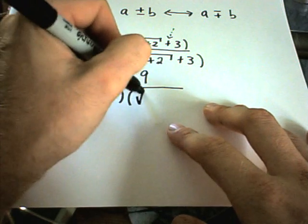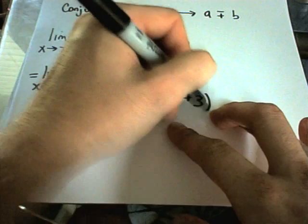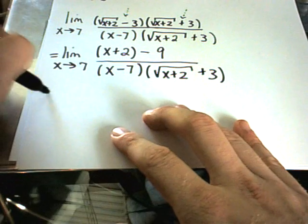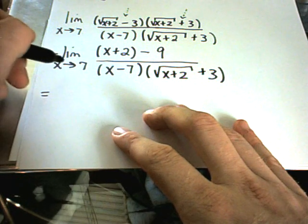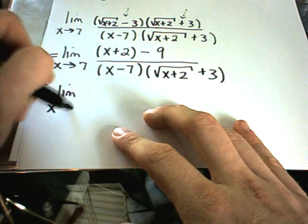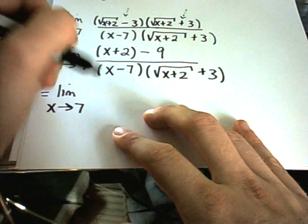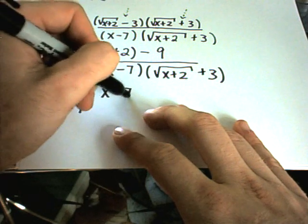I have √(x+2) + 3 still hanging out. I'm doing some algebra; I can keep simplifying. Notice that I've got x + 2 - 9 in the numerator, which gives me x - 7.